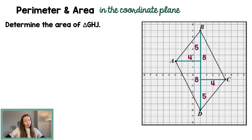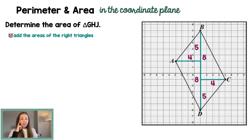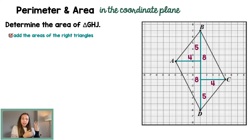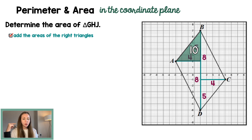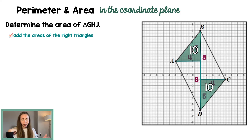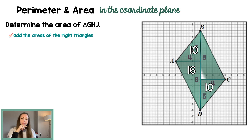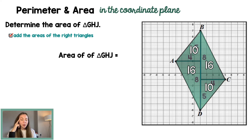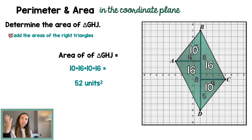Now we want to find the area of quadrilateral ABCD. To do this, we find the area of each of the right triangles and add them up. Our first triangle: base times height is 4 × 5 = 20 ÷ 2 = 10 square units. It's the same as the triangle on the other side, also 10 square units. For the other pair of triangles: 4 × 8 ÷ 2 = 16, and 16 again. So the area of quadrilateral ABCD is 10 + 16 + 10 + 16 = 52 square units.